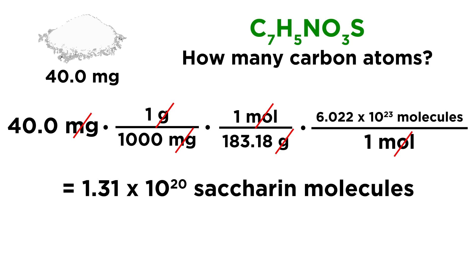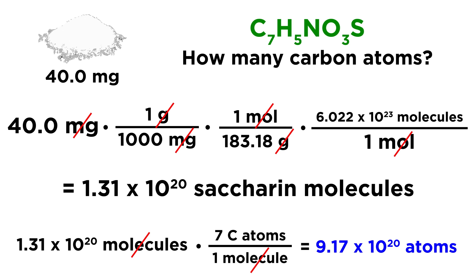So we're almost there. But remember, the question asks how many carbon atoms are there, not saccharin molecules. So we take our number of molecules, and then we just have to multiply by 7 carbon atoms per molecule, because each molecule of saccharin has 7 carbon atoms in it. So however many molecules we have, we need to multiply that by 7 to get the number of carbon atoms that there are. So molecules will cancel out, and we end up with 9.17 times 10 to the 20 carbon atoms. And that will be our answer for this question.